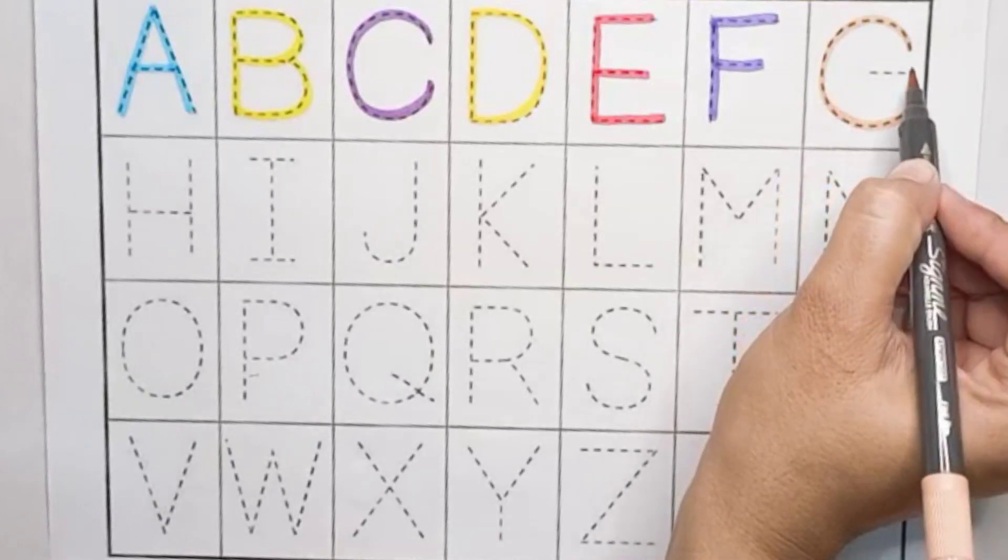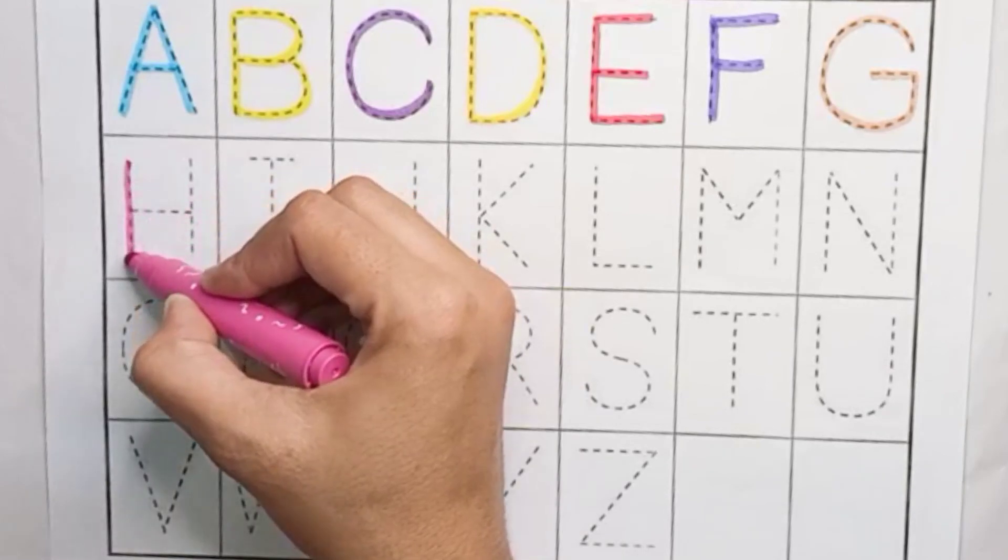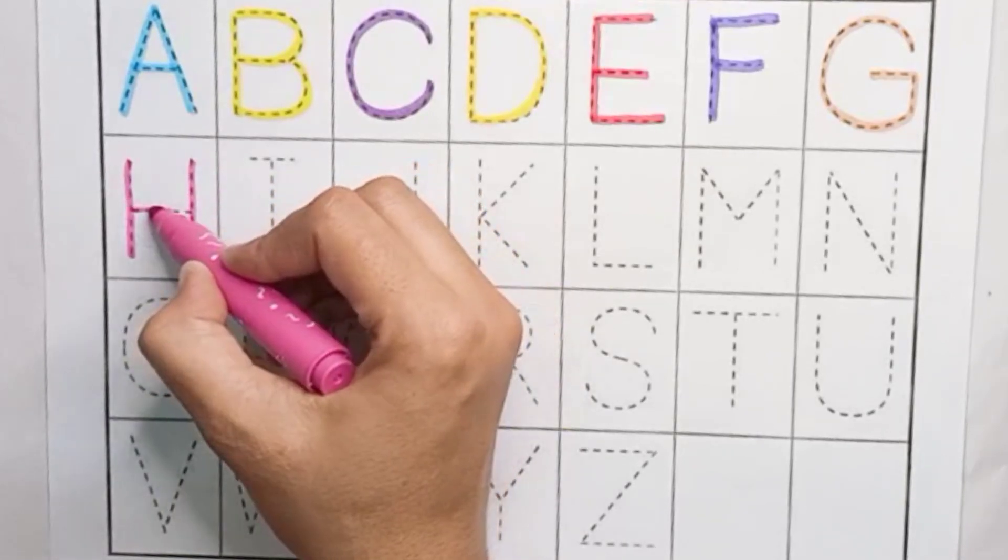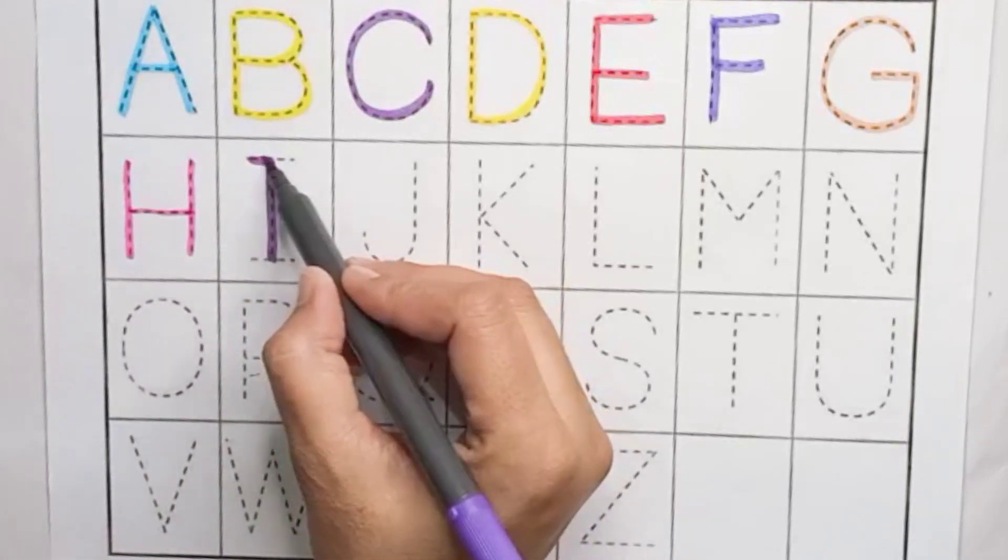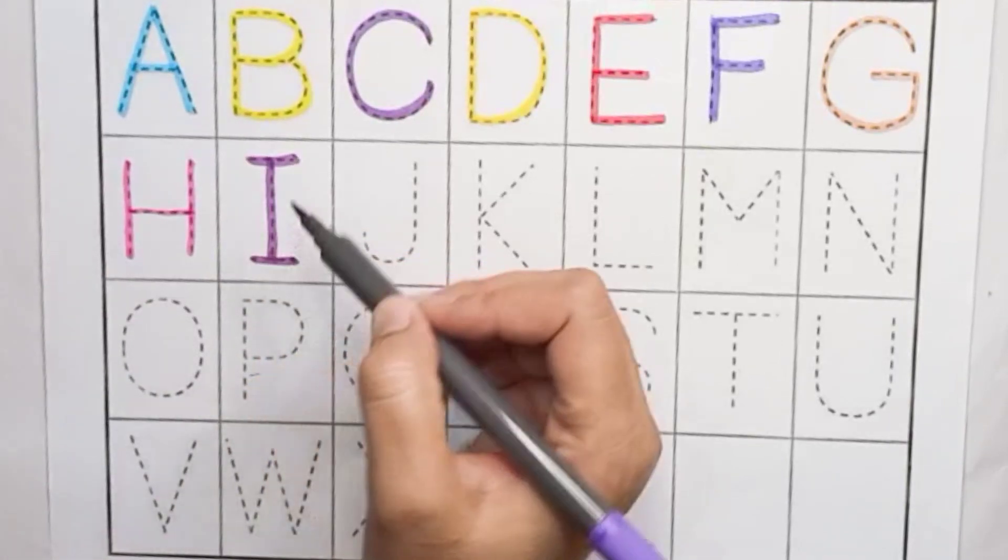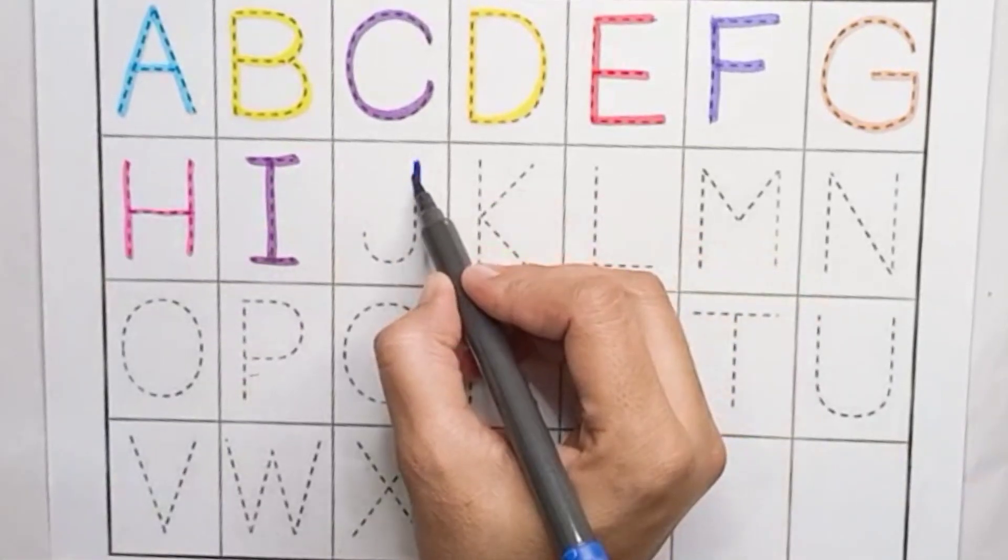G, G for gate, pink color. H, H for hat, lavender color. I, I for ink pot, dark blue color.